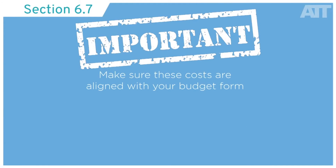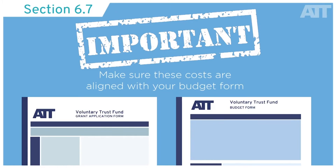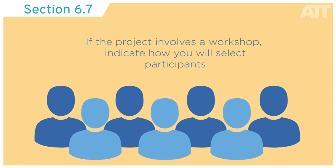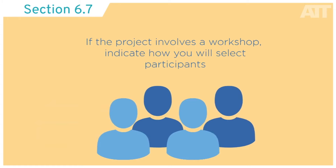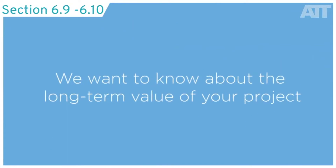It's important that the cost associated with each phase or activity is aligned with your budget form. If the project does involve a workshop, you should indicate how you will select participants. In 6.9 and 6.10, we want to know about the long-term value and effects of the project.